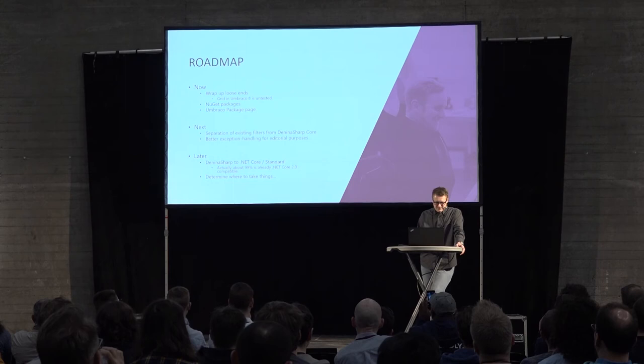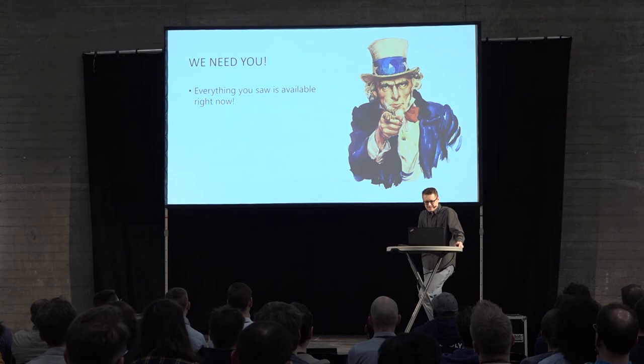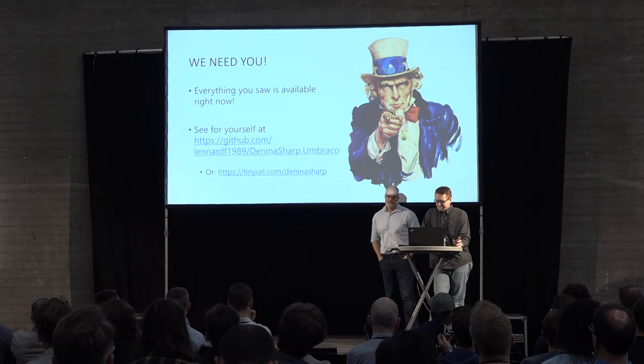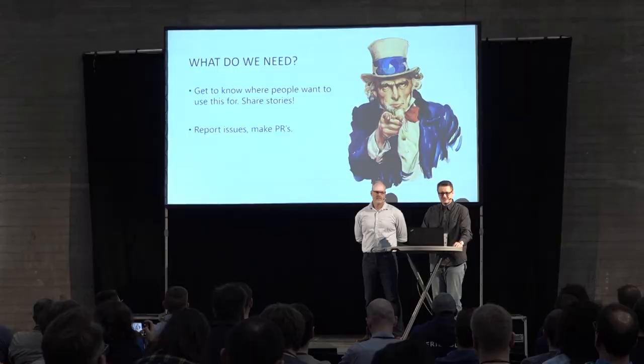We need to determine where we're going to take things with this — and we need you for that. Everything you saw is available already at my GitHub. For convenience, I also posted a tiny URL — you only have to remember NinerSharp. What do we need from you? I'd really like to know use cases people have for this — come to us with use cases, what you're intending to use this for and why. Maybe we can figure out something to make this even better.